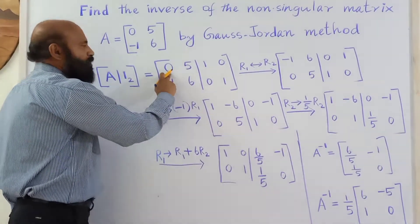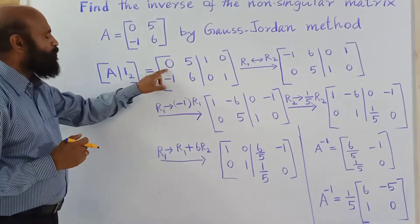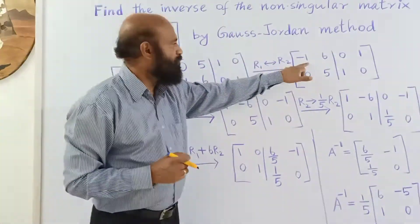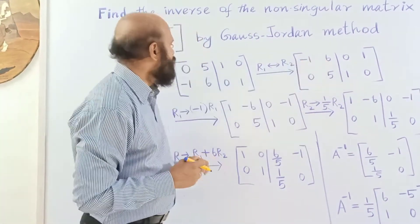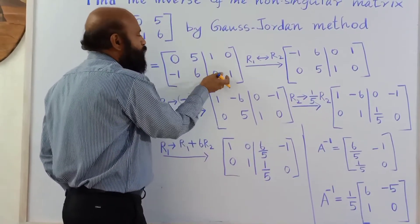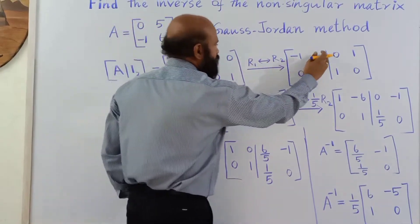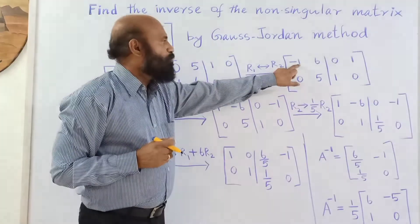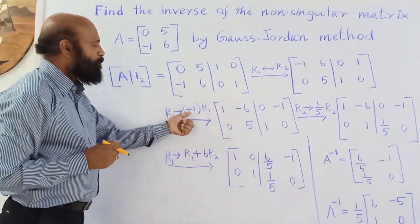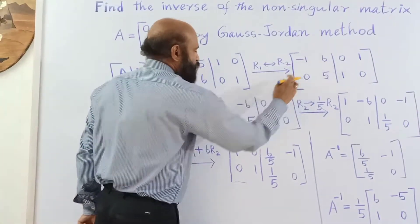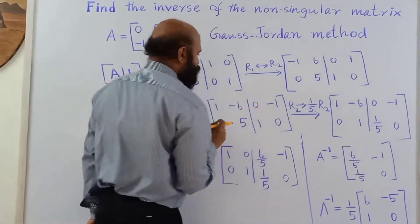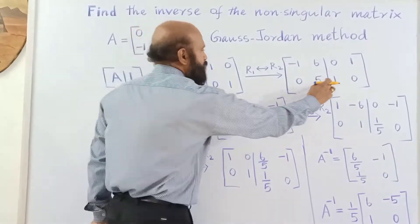When we make this left matrix into an identity matrix, the right side will become the inverse. We need a 1 in the top-left position, but currently there is a 0 there, so we interchange row 1 and row 2. After the interchange, [−1, 6] becomes the first row and [0, 5] the second row. Applying the same operation to the identity side gives [0 1] as row 1 and [1 0] as row 2. Next, since the first element is −1, we multiply row 1 by −1 to make it +1: row 1 becomes [1, −6] and the identity side becomes [0, −1].